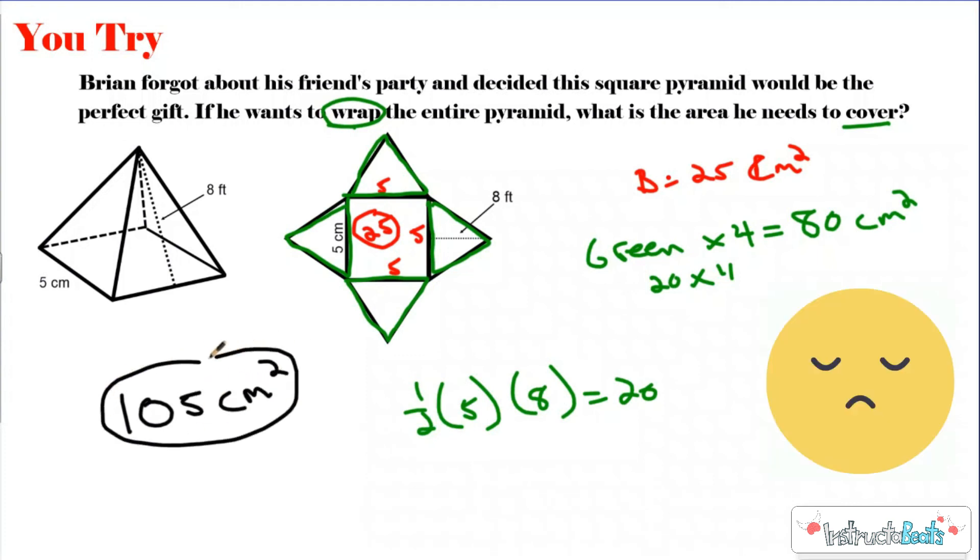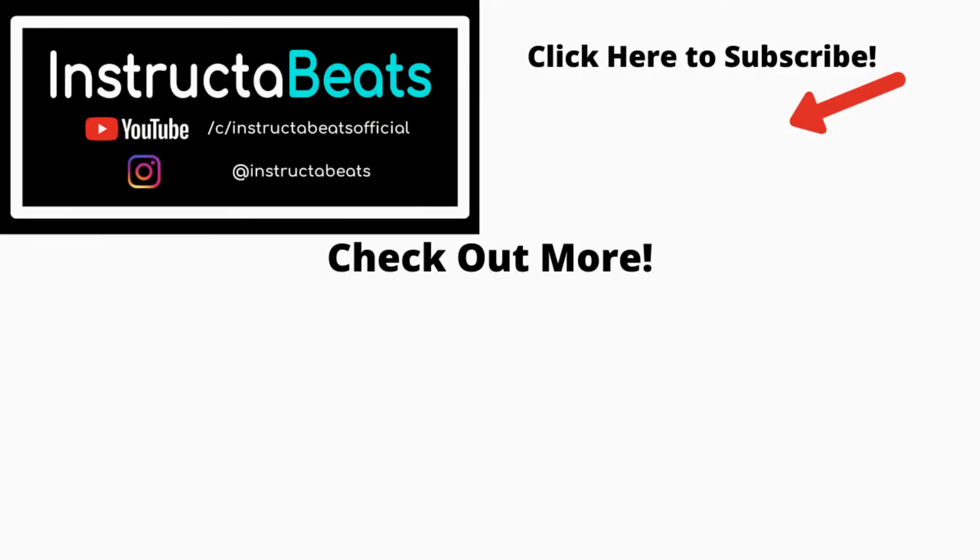Poor Brian, who will no longer be a good friend because he gave him a square pyramid, needs to buy 105 centimeters squared of wrapping paper. Hopefully this made sense to you. If not, it's okay to fail as long as you learn from it. Go back, re-watch the video, see where your mistakes were and how you can get better. Thank you so much for checking us out today. We know there's lots of different options online. We appreciate you spending your time with Instructor Beats.